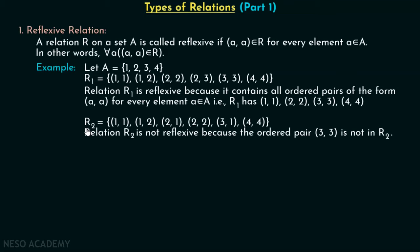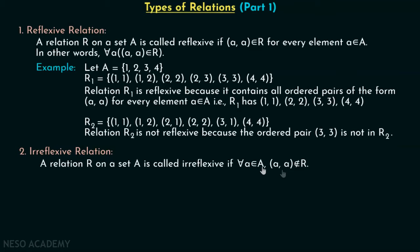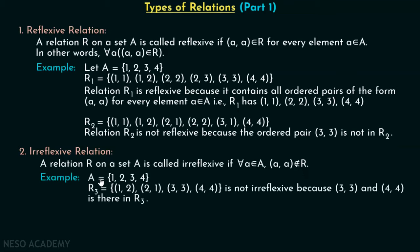Now let's discuss the second type, that is irreflexive relation. A relation R on a set A is called irreflexive if for all A belonging to A, (A, A) does not belong to R. This is just the opposite of what we have seen in reflexive relation. For every element A belonging to A, (A, A) must not belong to relation R.